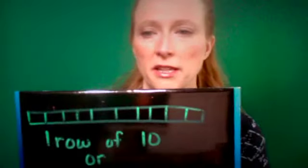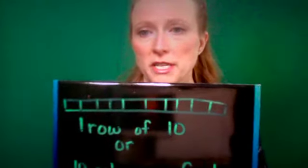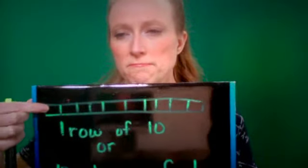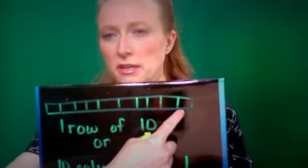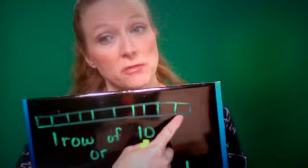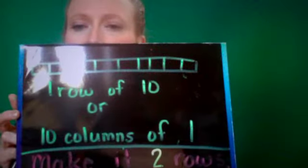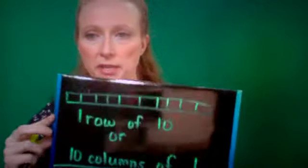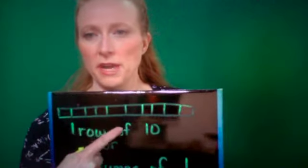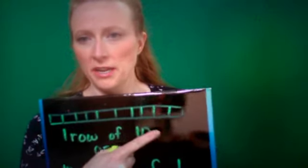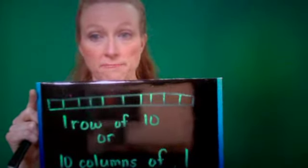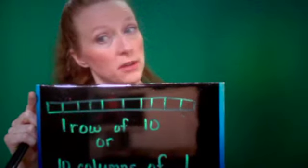The first thing we're going to do: it says one row of ten. So if we do one row, there are ten tiles in that row. That could also, if they asked how many columns, turn into ten columns of one — one, two, three, four, five, six, seven, eight, nine, ten. It could also be ten columns of one.